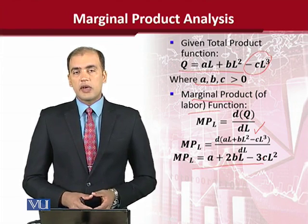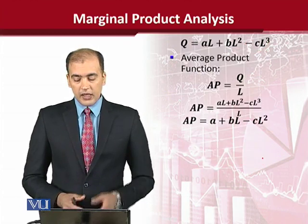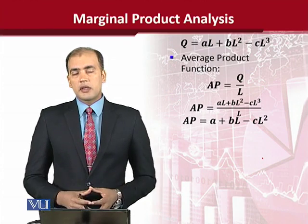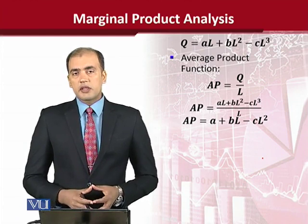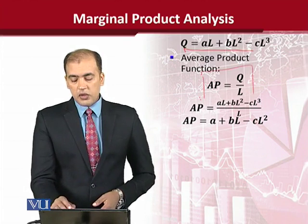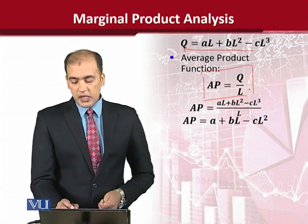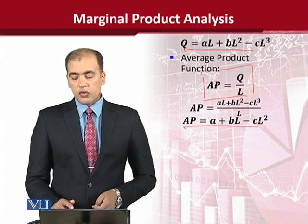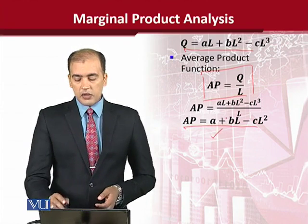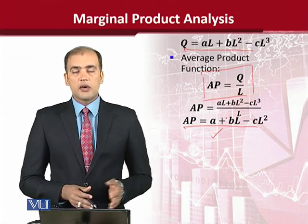We can also find the value of the average product of labor in order to analyze and compare it. The total production function is used to take the ratio with labor, which allows us to get the average product of labor. This is done by simply dividing the whole function by labor, and we get the average product of labor.